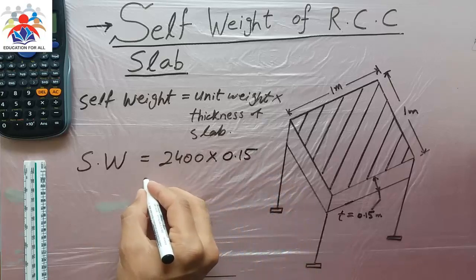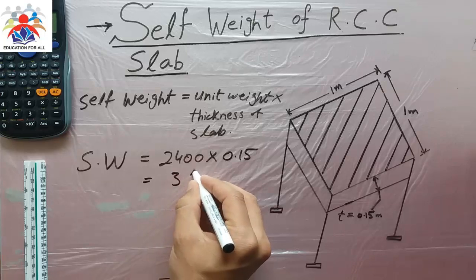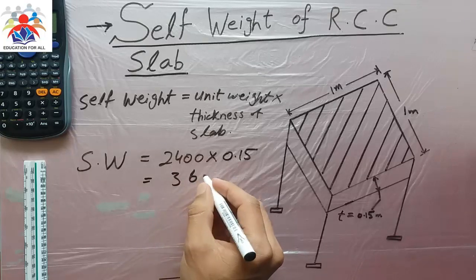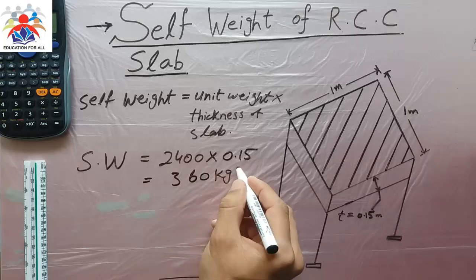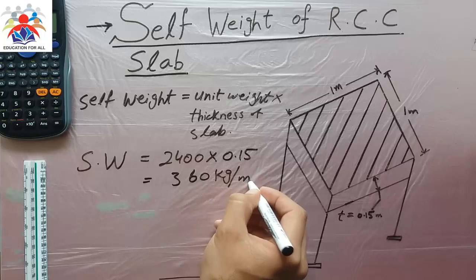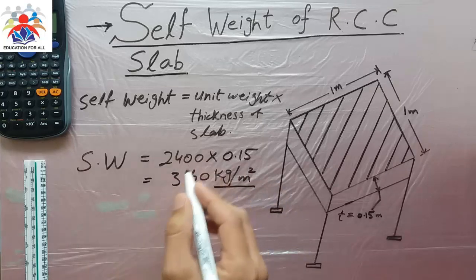So the answer would be 360 kilograms per square meter. How did we get this unit of kilograms per square meter?